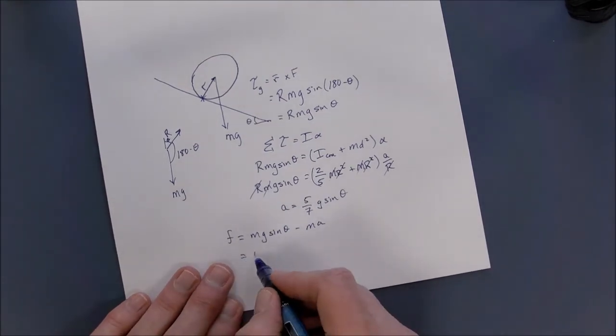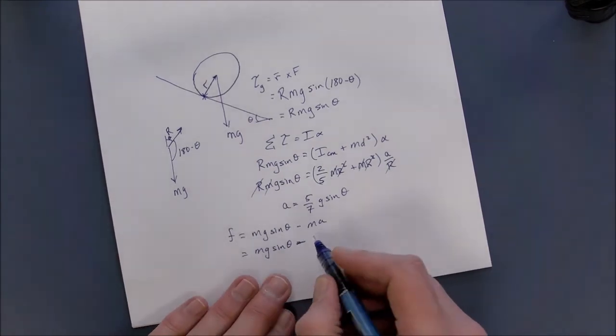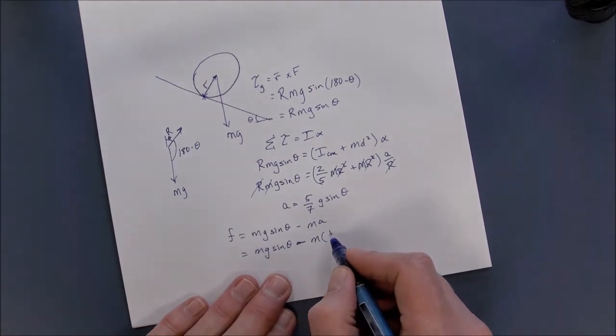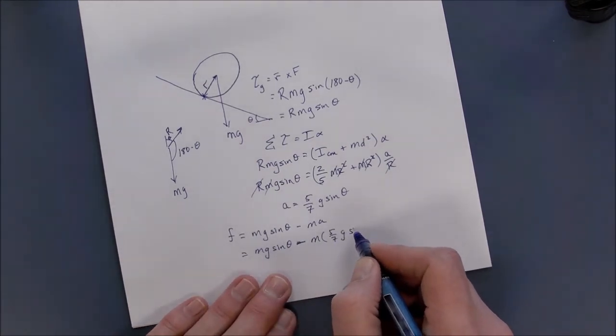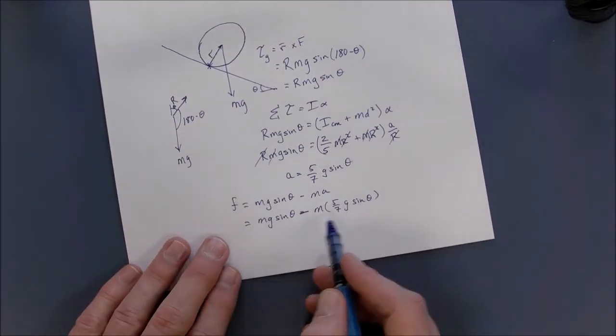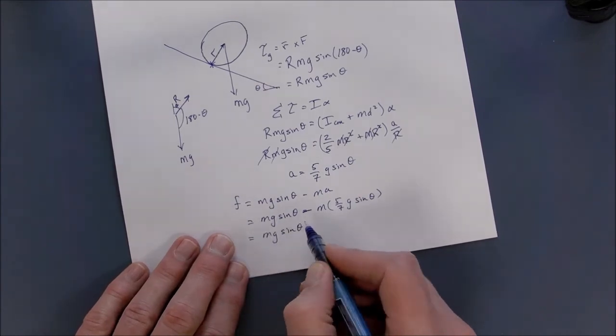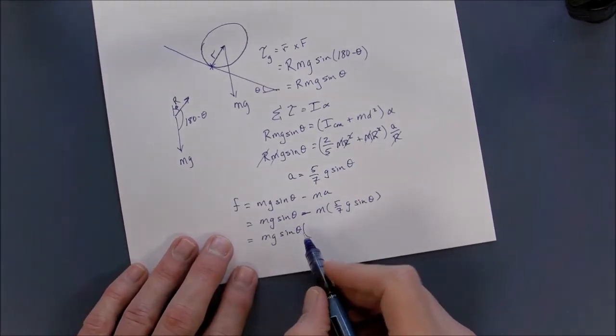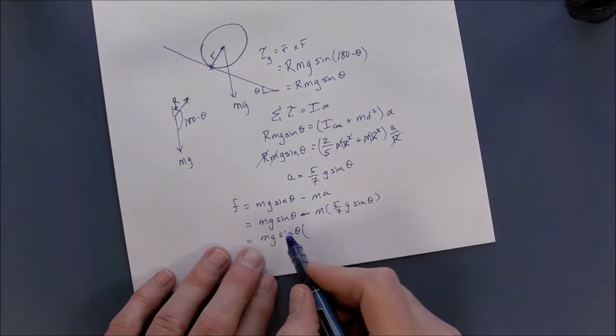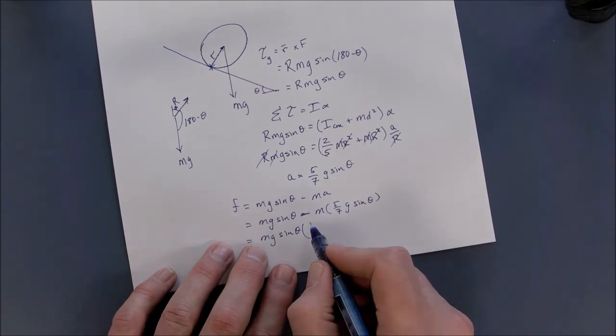We just found that A. Minus m times five-sevenths g sine theta. And we can pull out an mg sine theta. And then what we'll end up with is this is going to be seven-sevenths minus five-sevenths, which is two-sevenths.